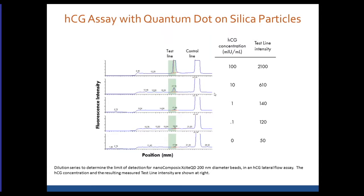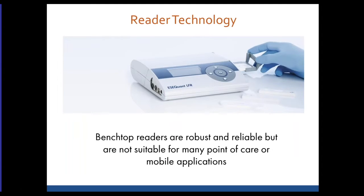On our reader, a scan of fluorescence as a function of position shows a bright control line and test lines whose intensity we quantify by integrating under the curve. At relatively high HCG concentrations you get a large signal, and as you go lower the signal diminishes. We're getting down to about 0.1 mIU/mL for HCG, which is roughly an order of magnitude better than the best pregnancy tests on the market today. These particles are providing a very sensitive readout for this particular assay.